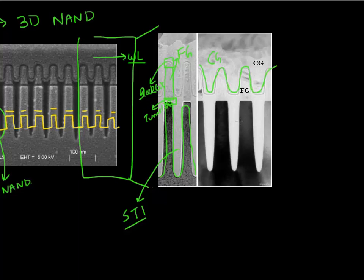As we have discussed previously, the traditional way people have been shrinking NAND flash memory — decreasing the cost per bit — is by scaling this individual NAND memory cell, specifically scaling the feature size of this individual NAND memory cell. But increasingly we see that this approach is running out of steam.